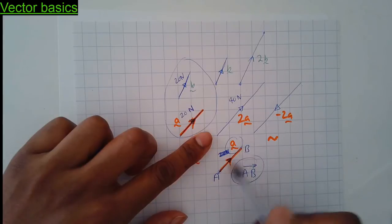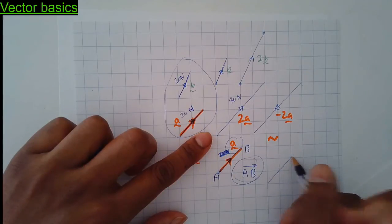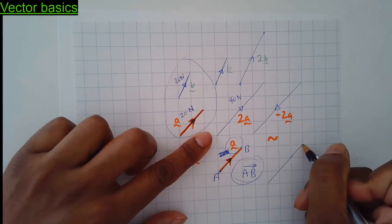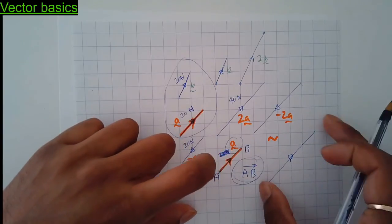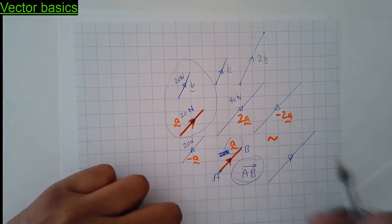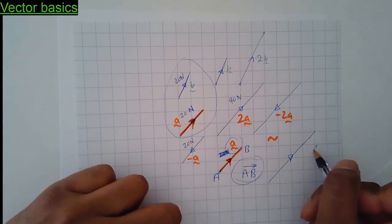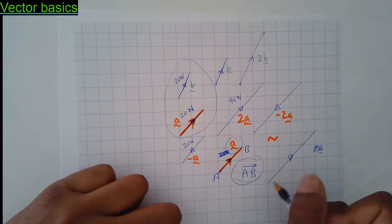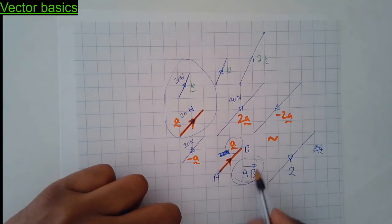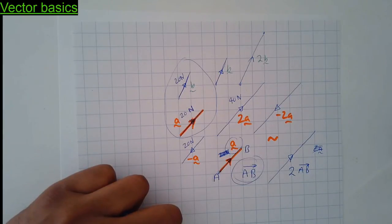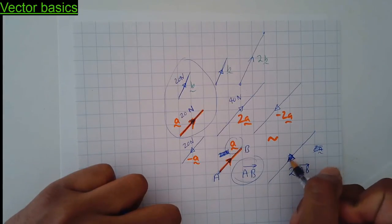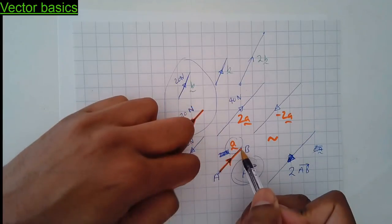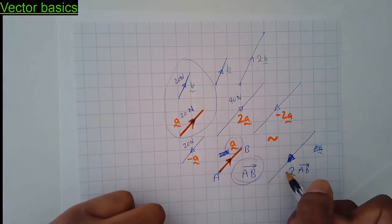If I have that same vector but double the size and same direction, you could write it as 2a, as we've just seen, or as two lots of AB. And if the arrow is going in the opposite direction — double the size but in the exact opposite direction — you just stick a minus in front.